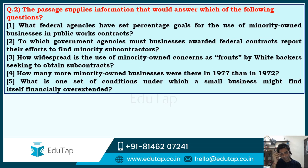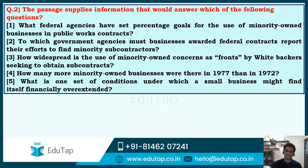Question 2: The passage supplies information that would answer which of the following questions? The options are: (A) What federal agencies have set percentage goals for minority-owned businesses in public works contracts? (B) To which government agencies must businesses report their efforts to find minority subcontractors? (C) How widespread is the use of minority-owned concerns as fronts by white backers?